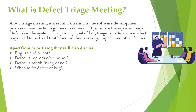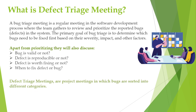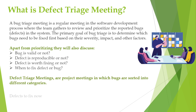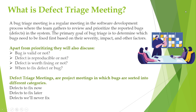In the defect triage meeting, bugs are divided into different sections: defects that need to be fixed now, defects to fix later, and defects that will never be fixed. In the 'fix now' category, those defects need to be fixed on an immediate basis — these are bugs which will create huge damage to the software or application, so they need to be resolved as soon as possible.